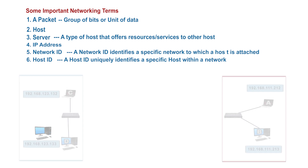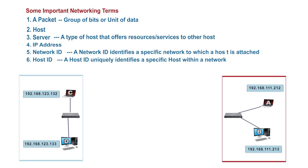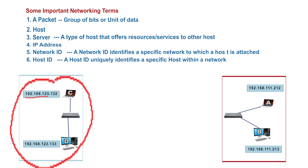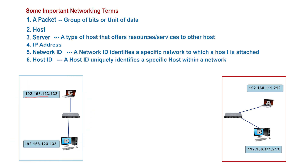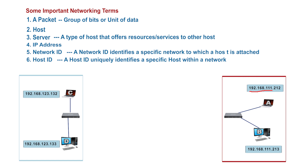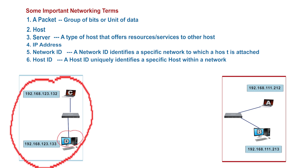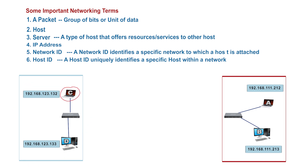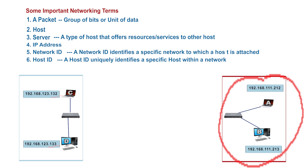For example, in this illustration we have two separate networks. Each of these networks has a unique network ID. For this network group, this is the ID, and for this group, here is the network ID, which is totally different from that of group 1. Talking of host ID, in this group each and every host is uniquely identified by an ID — same as in this group.